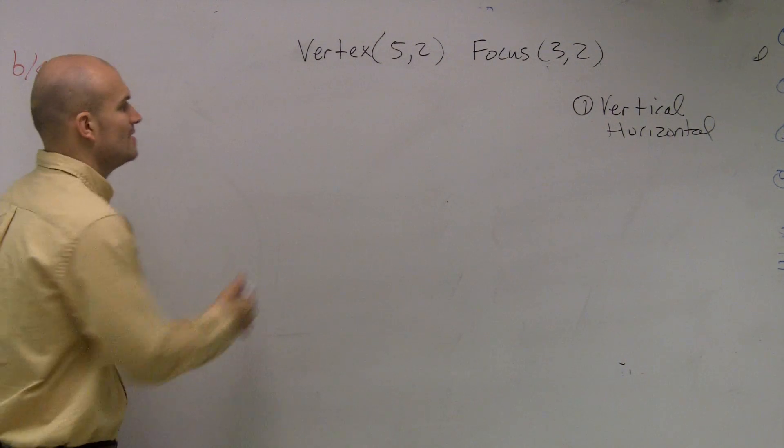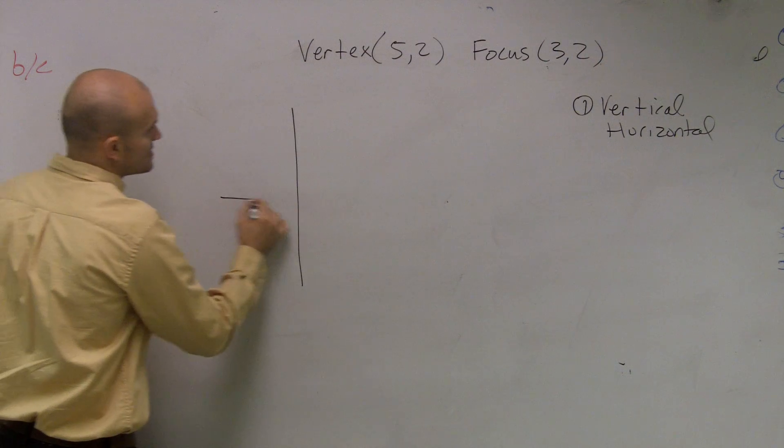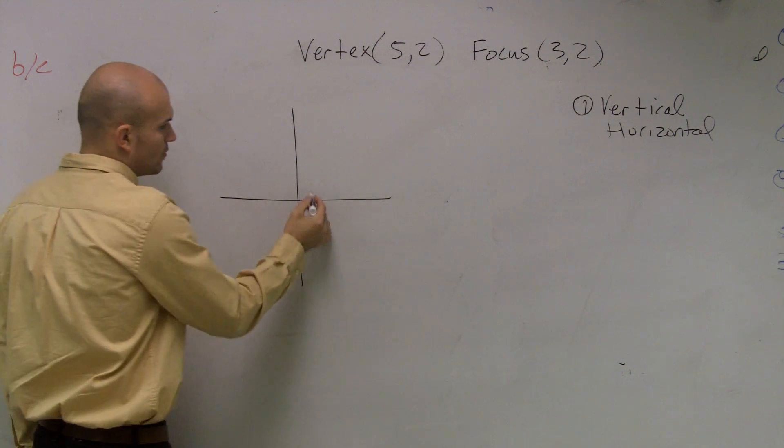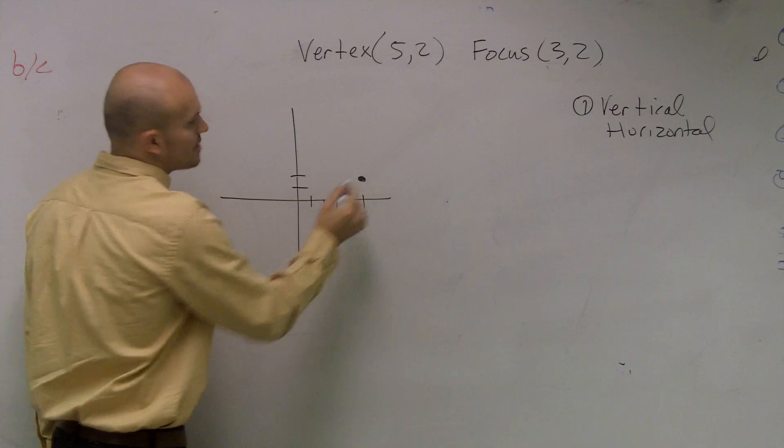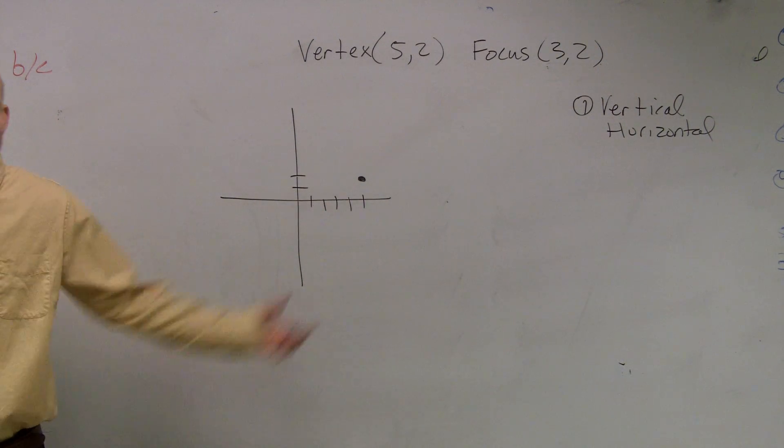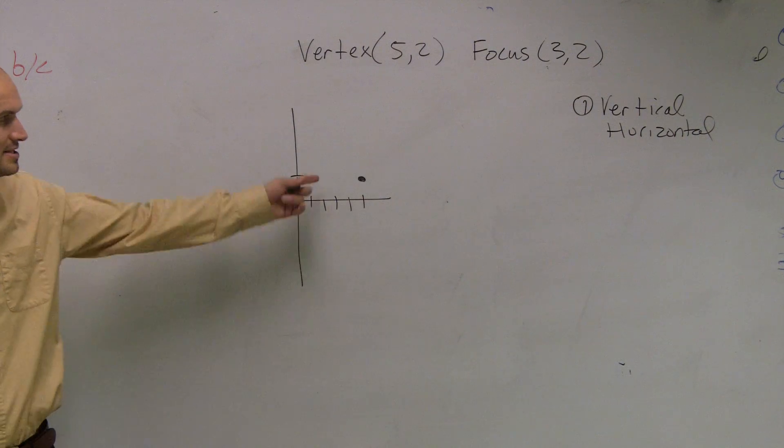Well, let's take a look at it. Let's plot what we're given. They say the vertex is at 5 comma 2. One, two, three, four, five, one, two. So I plot that point. Everybody might not have any idea what to do here, but we can all plot a point, right? We know that's the vertex.